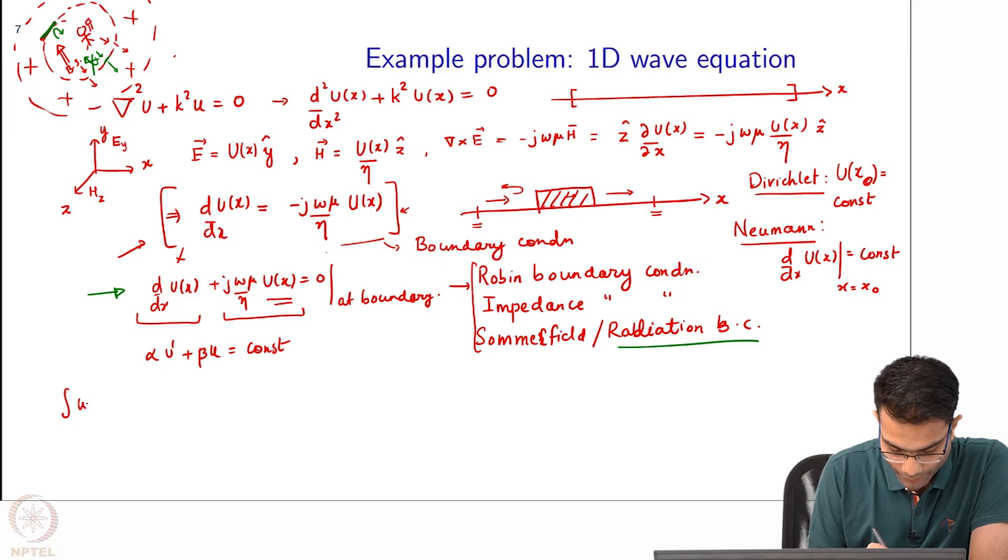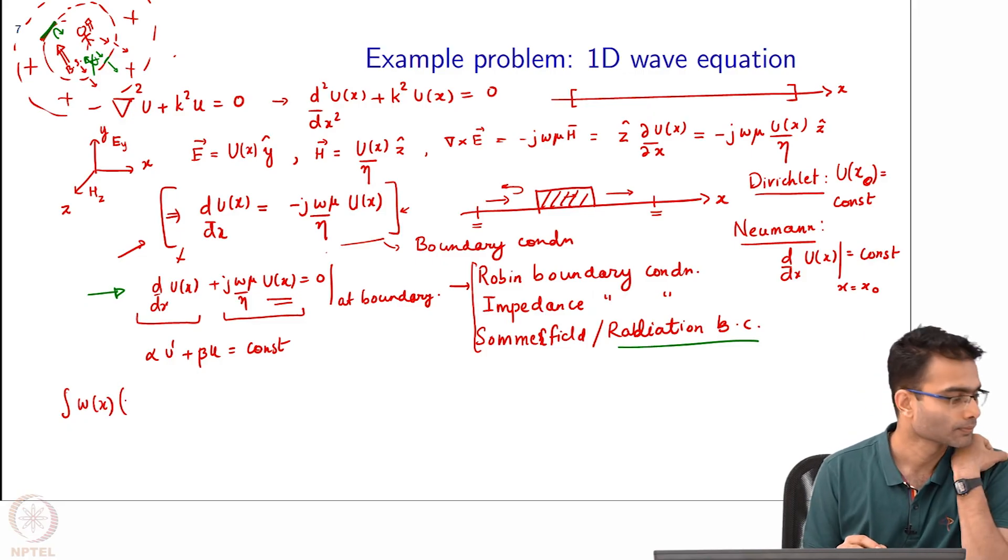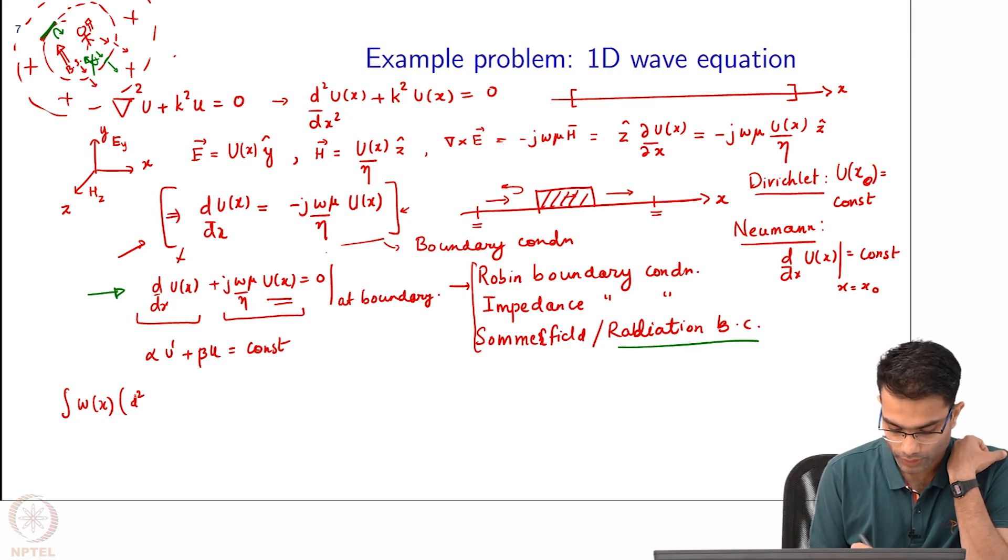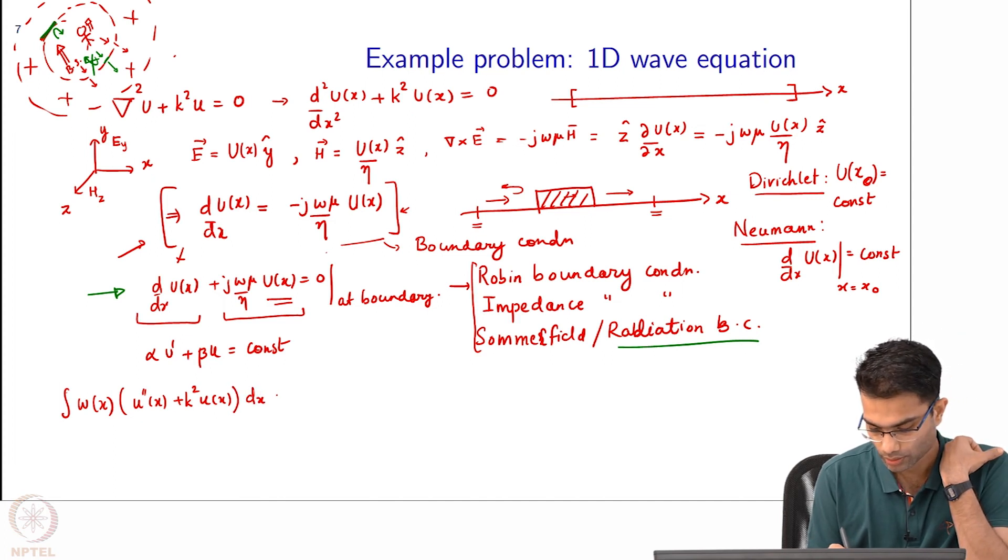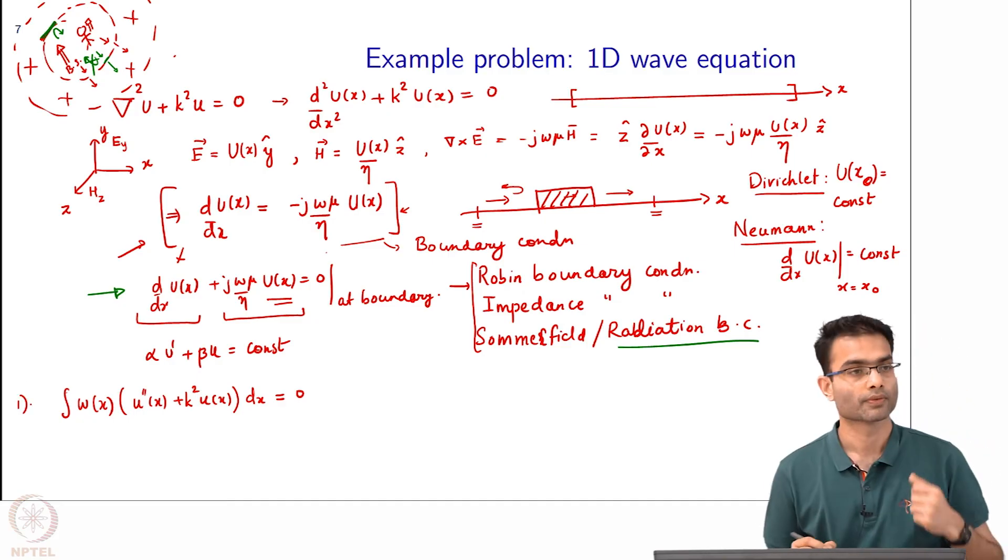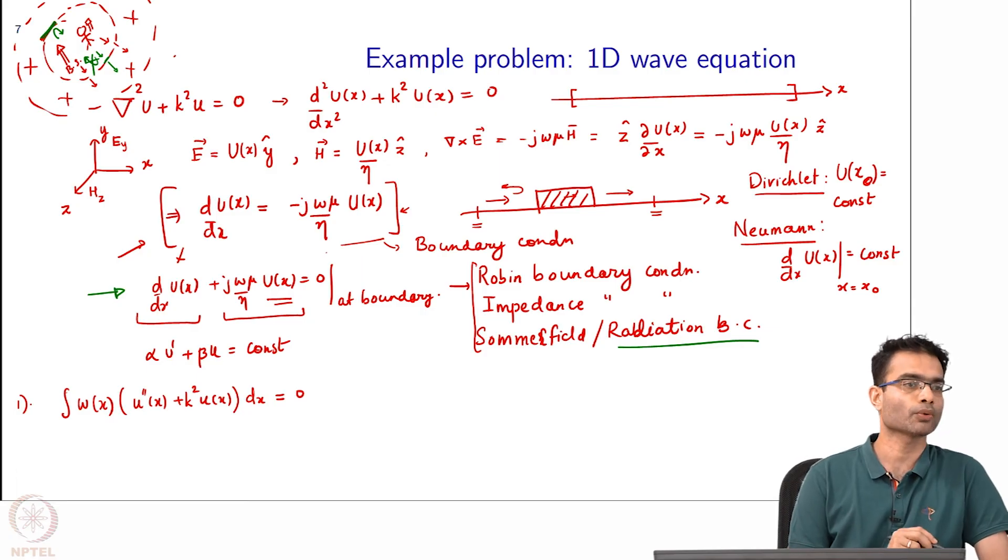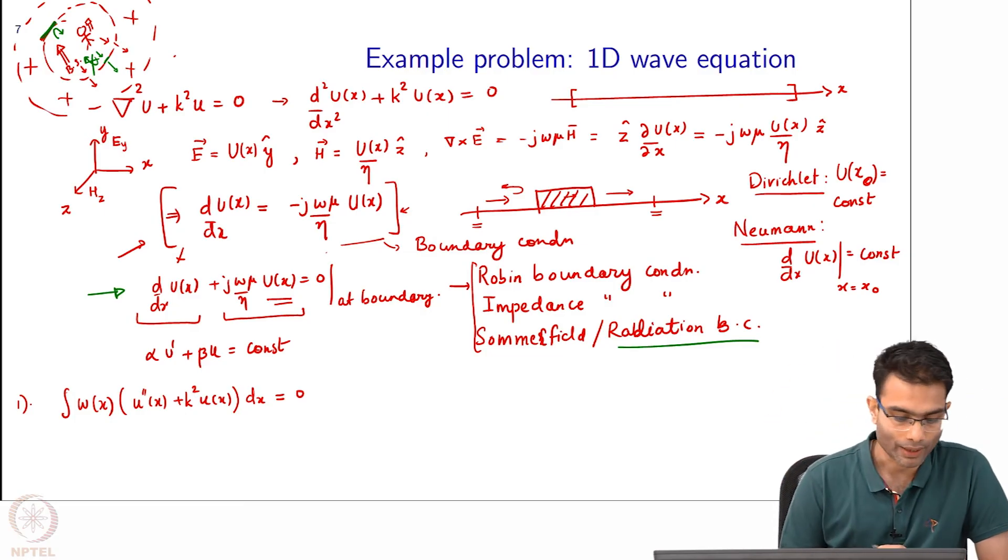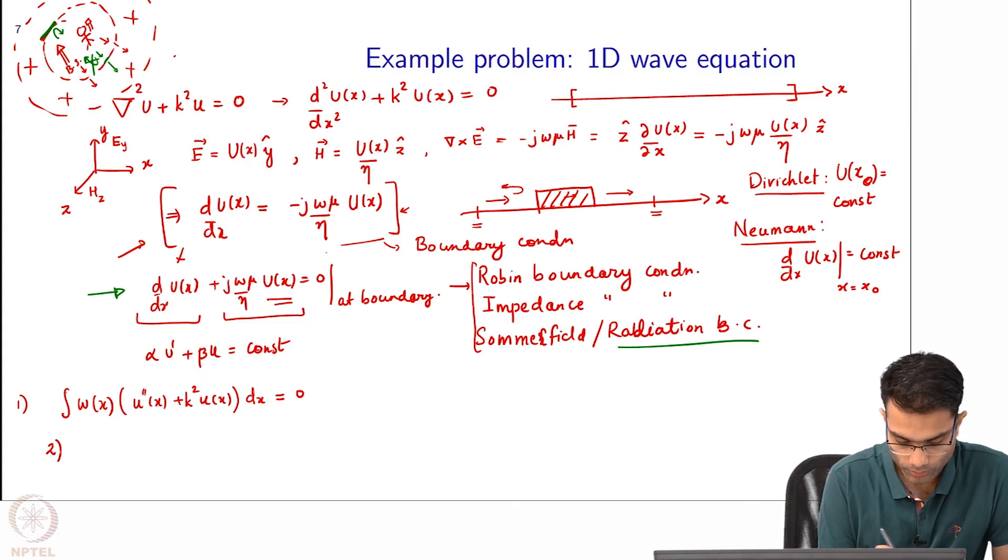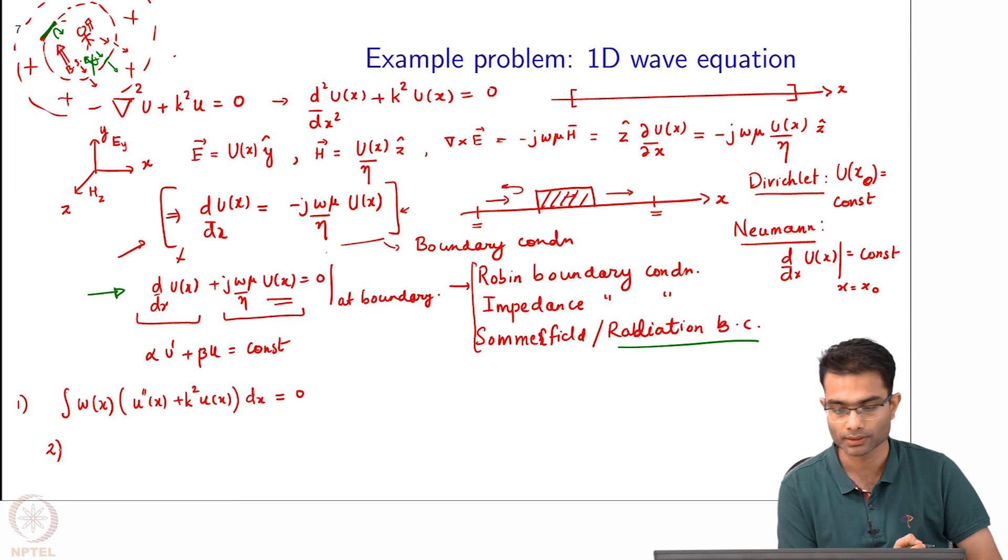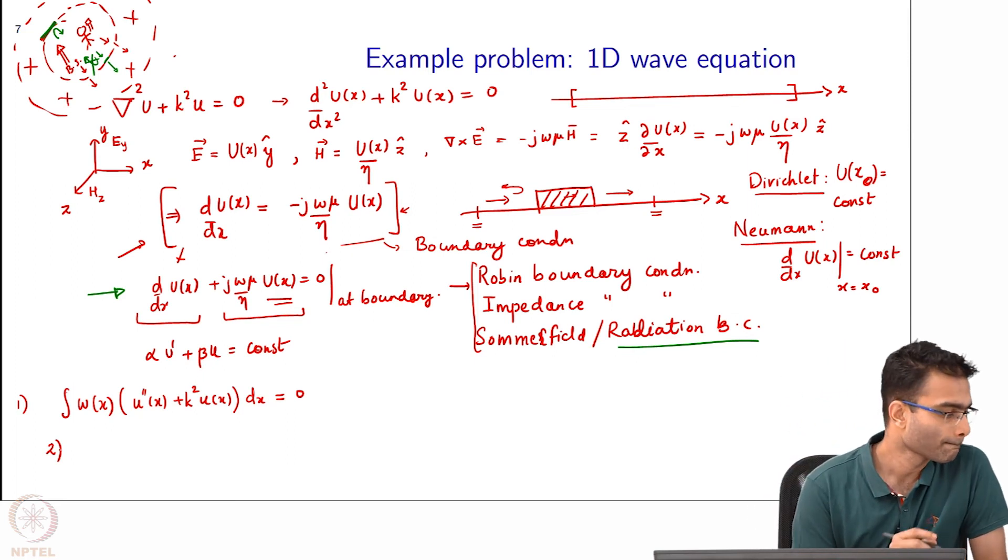So let us put the integration sign first. Let us call the weighting function w, and what is the residual in this case? Let us just write it as u double prime of x plus k squared u of x minus 0. There is no right hand side right now. This is just the definition of FEM - take your weighting function, take your residual, integrate. The w's are going to be the weighting functions for each segment I will define it. I have not yet substituted the basis functions.